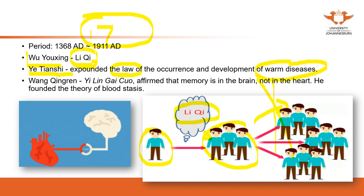Li Qi is very different from the six external pathogens because it can transfer from one patient to another with similar symptoms. During this period, some doctors also tried to improve theory by finding conflicts in Chinese medicine. For example, Dr. Wang Qingren compiled the book Yilin Gaicuo, meaning 'correction of mistakes in the field of Chinese medicine,' in which he tried to correct errors in Chinese medicine.